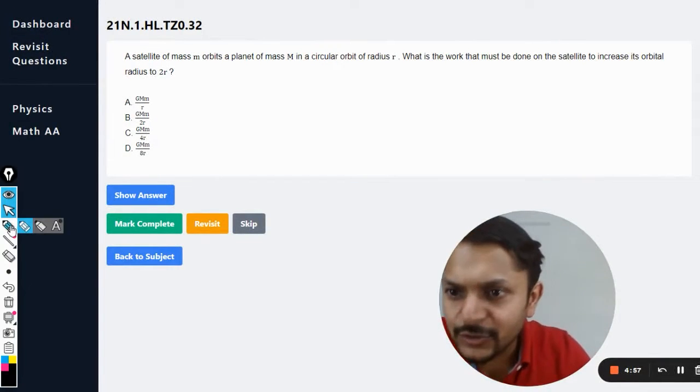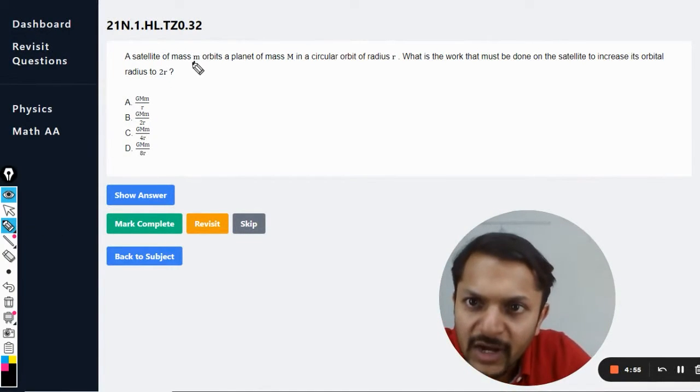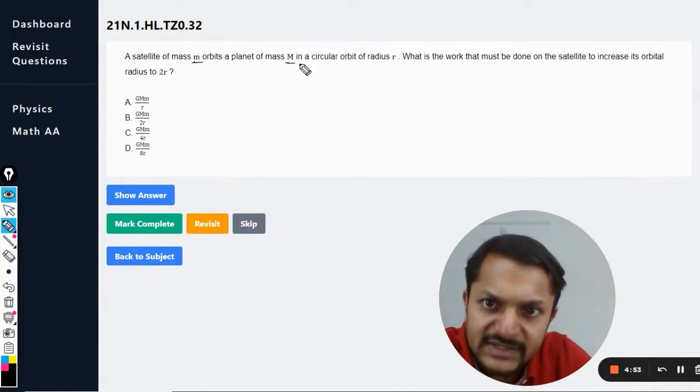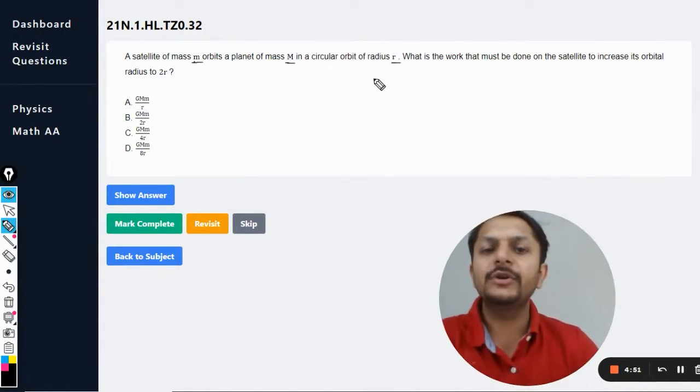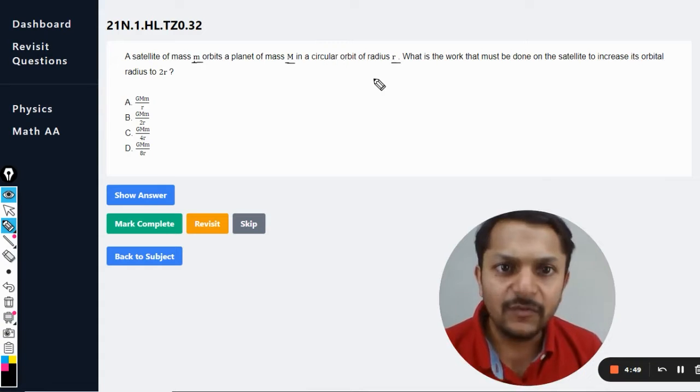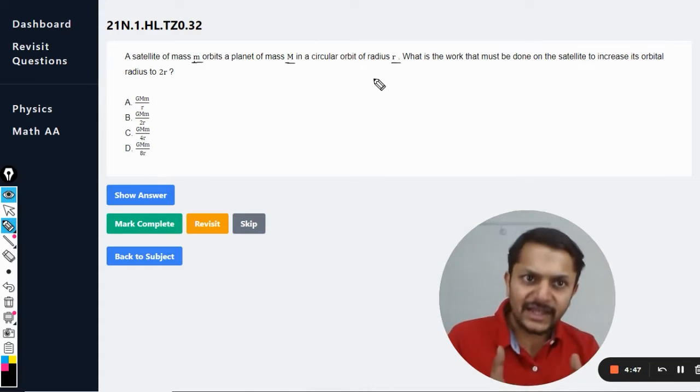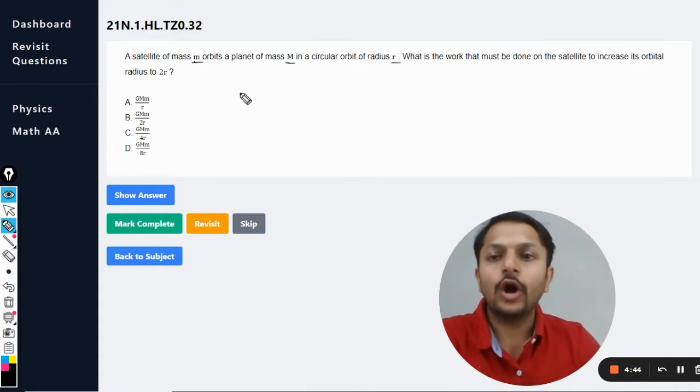Okay dear students, let us start doing this question. A satellite of mass m orbits a planet of mass capital M in a circular orbit of radius r. What is the work done on the satellite to increase its orbital radius to 2r?